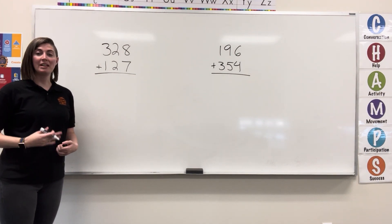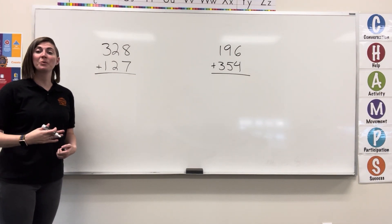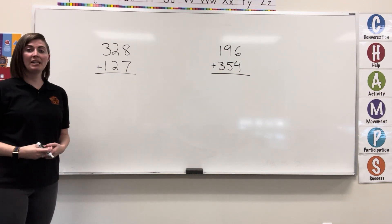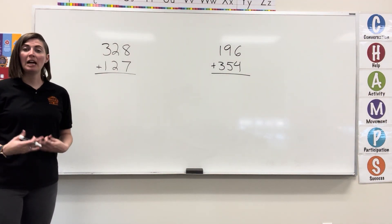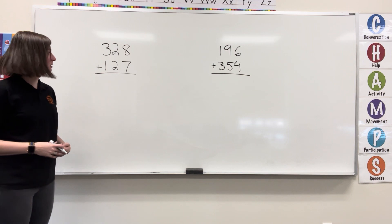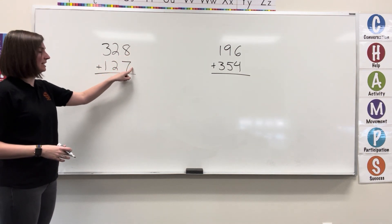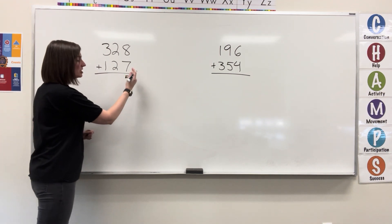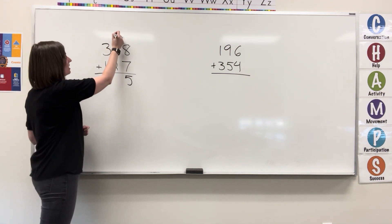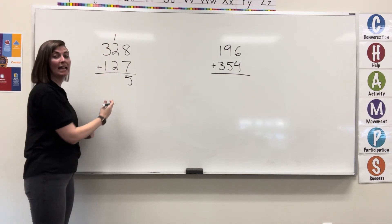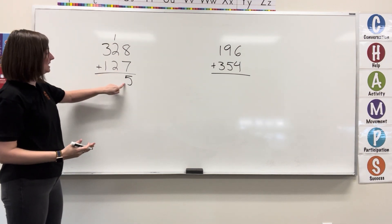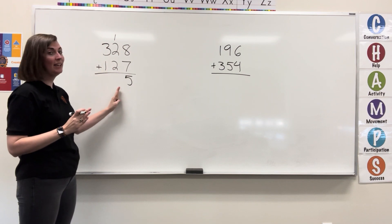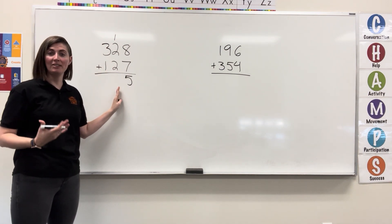In this video, we're going to be doing addition with regrouping. My first example is 328 plus 127. I'm going to start adding in the ones column. 8 plus 7 gives me 15. I'm going to write the 5, which is in the ones column, and write the 1 in the tens column. 15 gets separated because we want to make sure that the 1 in the tens stays in the place value it belongs in.